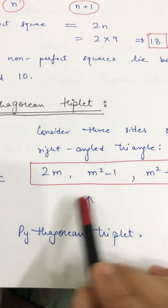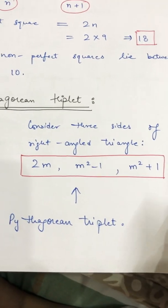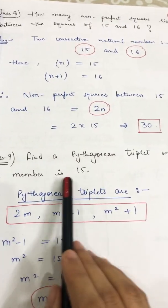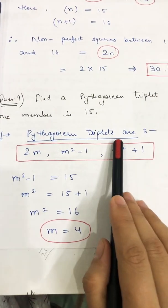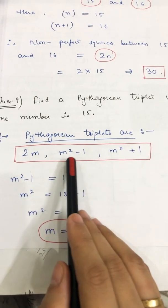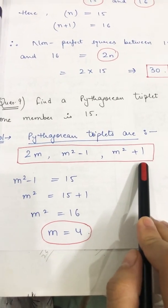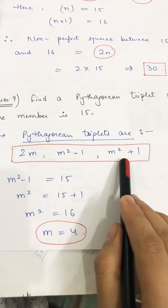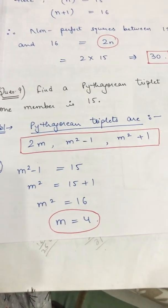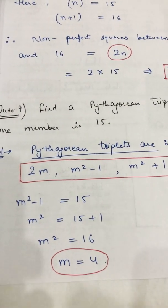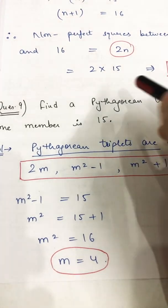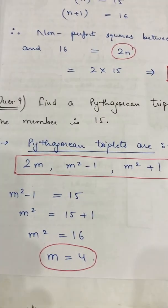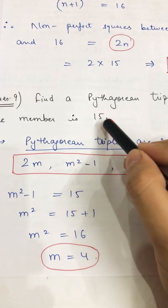Question 9: find the Pythagorean triplet whose one member is 15. Write: Pythagorean triplets are (2m, m²−1, m²+1) — learn these three. Now the key step: look at the given member, which is 15. Check first whether this number is a multiple of 2 or not.